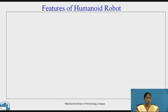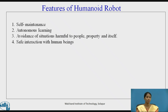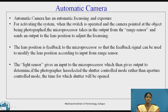Let's see the features of a humanoid robot. The first feature is self-maintenance. The second is autonomous learning. The third is avoidance of situations harmful to people, property, and itself. The fourth is safe interaction with human beings.